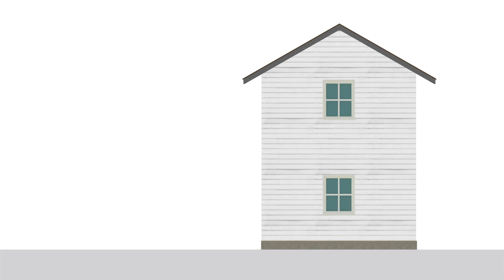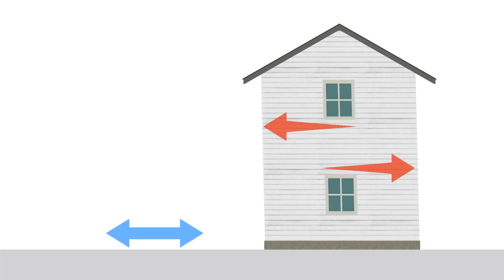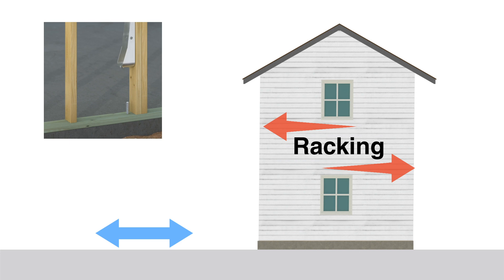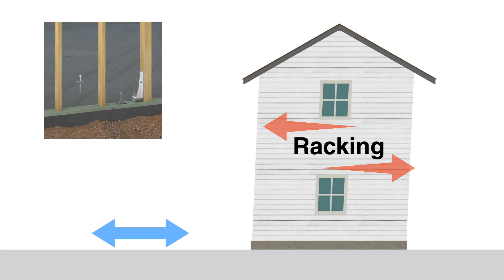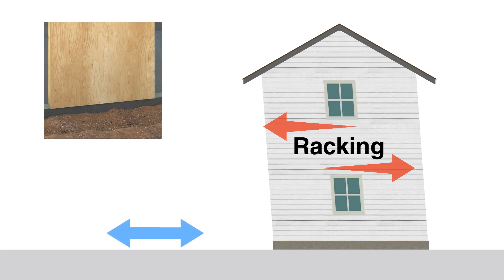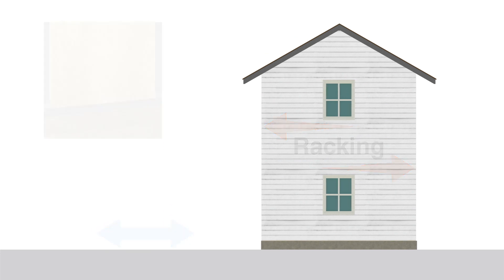During an earthquake, seismic forces can damage your home in several ways. A type of movement called racking occurs when lateral forces cause your home to tilt from side to side. Racking is resisted by structural sheathing attached to the wall framing.